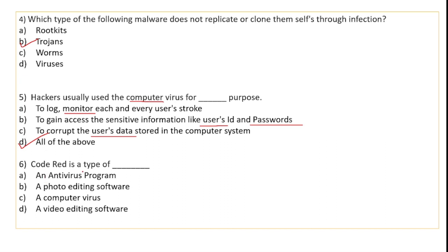What is Code Red? Code Red is a type of computer virus that was first discovered on 15th July 2001. It attacked Microsoft's servers.